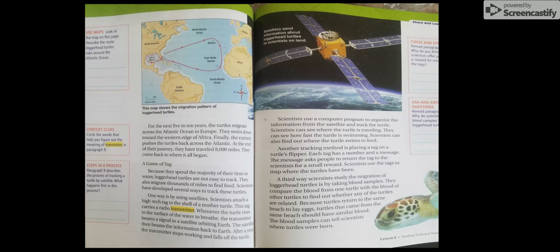Because they spend the majority of their time in water, loggerhead turtles are not easy to track. They also migrate thousands of miles to find food. Scientists have developed several ways to track these turtles. One way is by using satellites. Scientists attach a high-tech tag to the shell of a mother turtle. This tag carries a radio transmitter. Whenever the turtle rises to the surface of the water to breathe, the transmitter beams a signal to a satellite orbiting Earth. The satellite then beams the information back to Earth. After a year, the transmitter stops working and falls off the turtle.